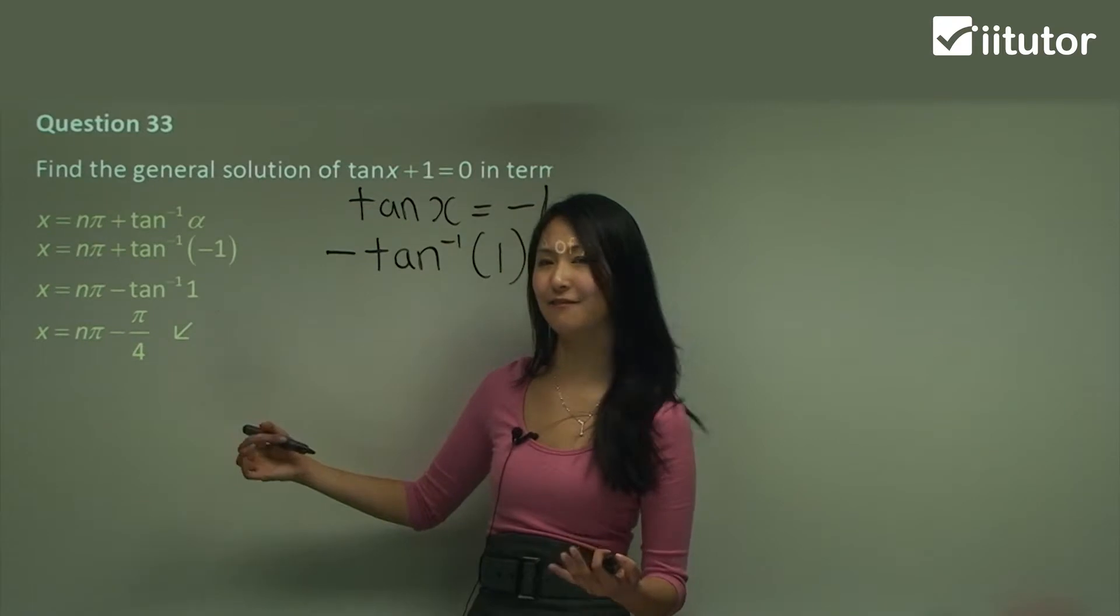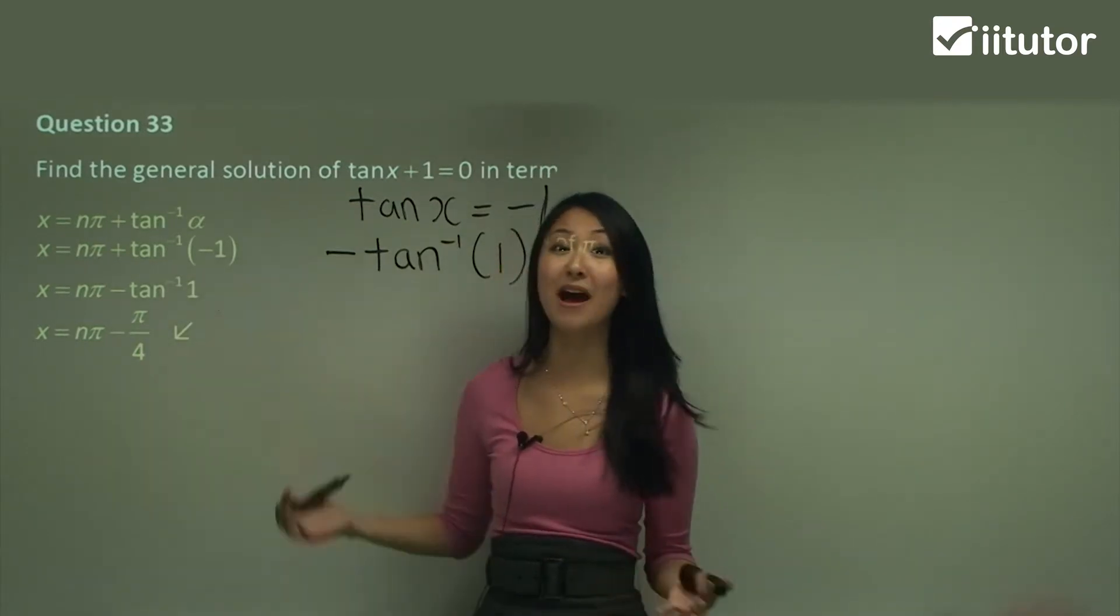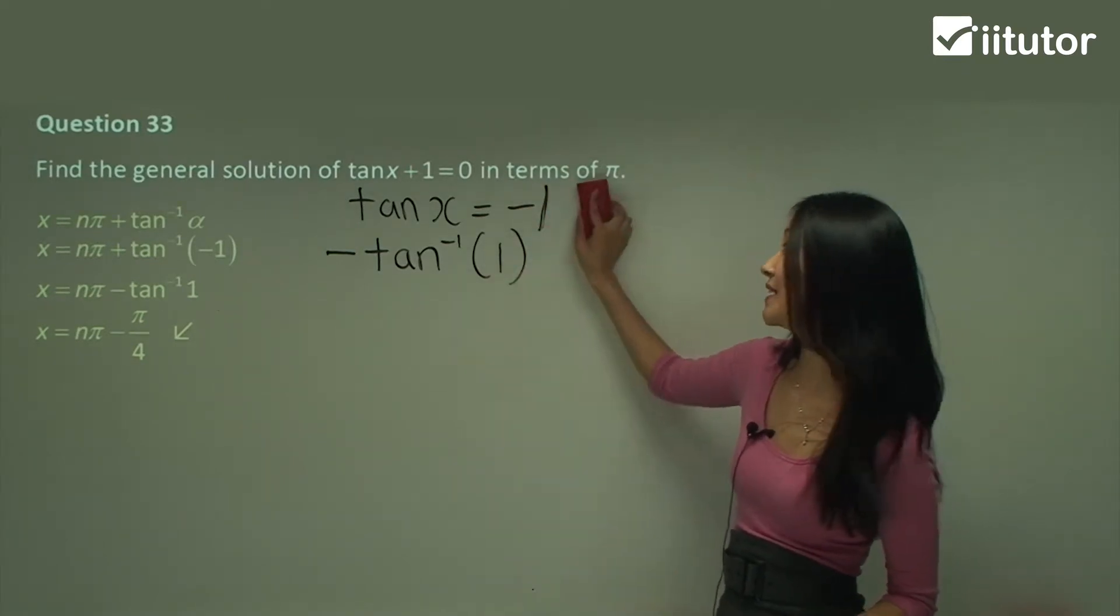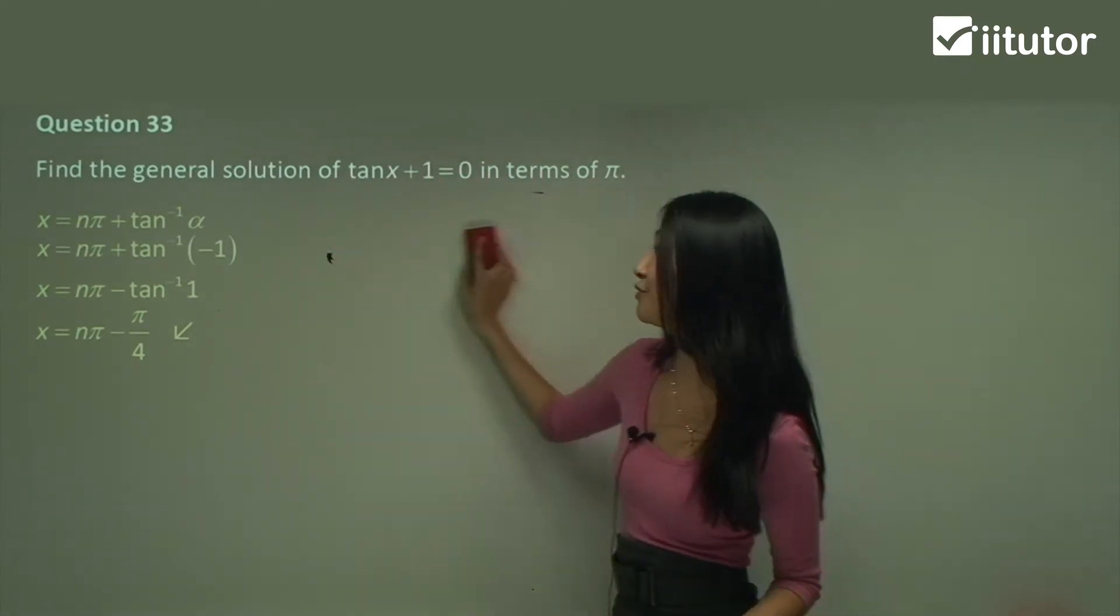Because there's no plus or minus in front, if it's negative, we just write minus pi on four like that. Remember, sometimes we do need to rearrange the equation before we can substitute it into the general solution.